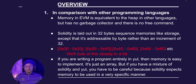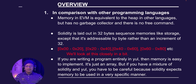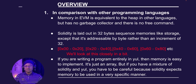If you are writing a program entirely in Yul, then memory is easy to implement because it is just like an array. In our previous tutorial, we discussed how to read an array directly in Yul — you just keep adding an index to it. If you want to read a slot in memory, you add 32 bytes, and if you want to write to a slot in memory, you also add an increment of 32 bytes.